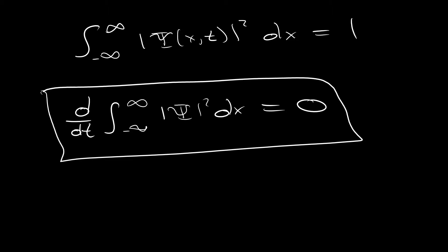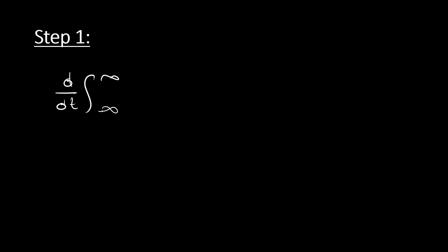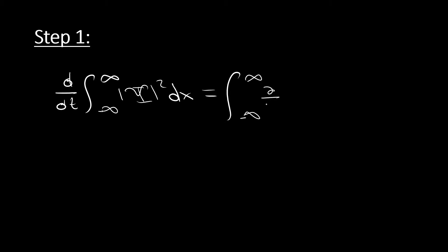So let's go ahead and begin with this proof. I've broken it up into a few quick and easy steps. We're going to start with the time derivative of the integral of the normalization of our wave function, and this whole thing equals zero. Because we're taking the derivative with respect to time, we should be able to move this inside the integrand, change it to a partial derivative, and still be able to do the integration.